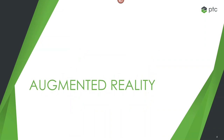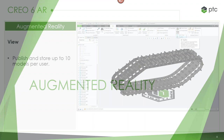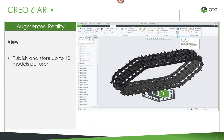The first section is augmented reality — something PTC is getting further and further into as a company that we wanted reflected in our CAD software. All the way back in Creo 4, two years ago, we included AR capabilities so you can share a model via email, send it to someone's phone, and they can place it on their desk and visualize the actual product. Great for design review or sharing information with stakeholders.